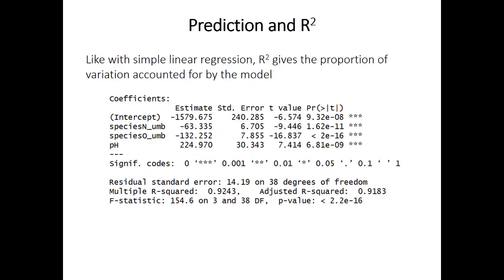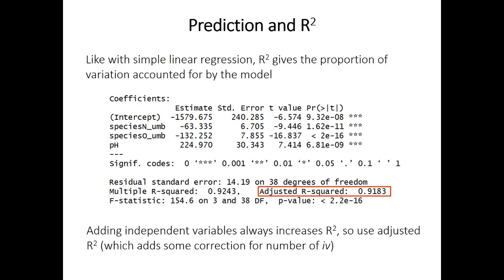Multiple linear regression gives an R-squared value, just like simple linear regression, indicating the proportion of variation accounted for by the entire model. However, adding independent variables always increases the raw R-squared. Multiple regression therefore generally uses the adjusted R-squared, which includes a correction for the number of independent variables included — essentially assessing whether adding a new variable increases model fit by more than you'd expect from chance alone.